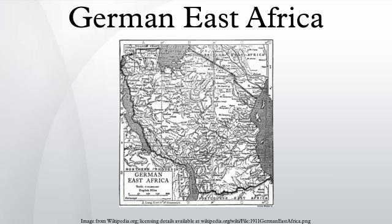German East Africa was a German colony in the African Great Lakes region, which included what are now Burundi, Rwanda, and the mainland part of present Tanzania. Its area was 994,996 km², nearly three times the area of present-day Germany.